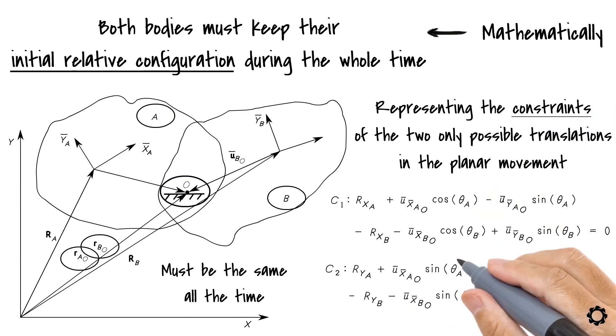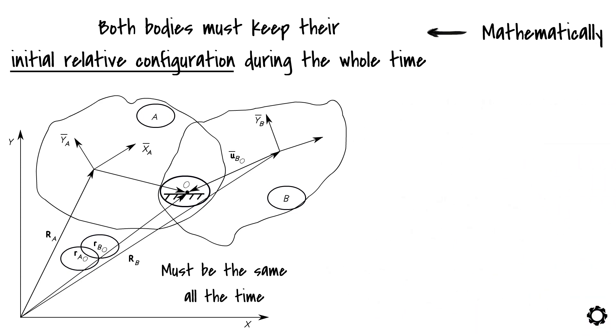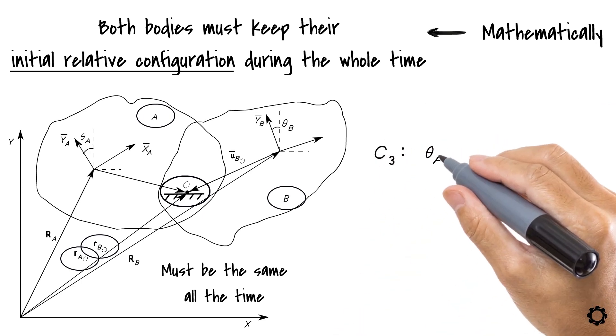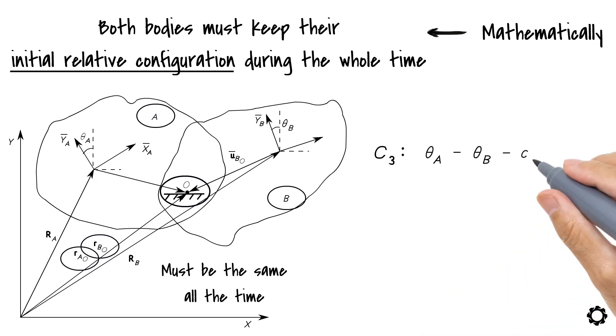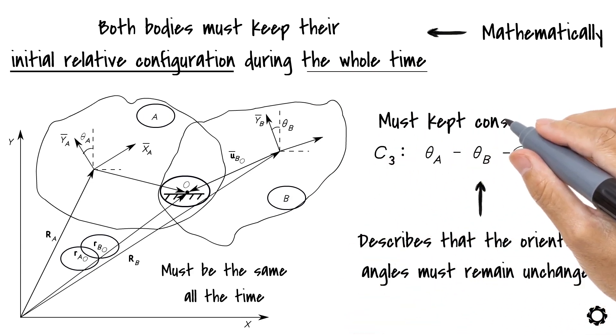We have now defined the constraints on the translations. Similarly, to define the constraint on the relative rotation of the bodies, we can say that C3 is theta A minus theta B minus C equals 0. This equation describes that the orientation angles must remain unchanged during the whole time. Whichever the initial orientation was, this must be kept constant.